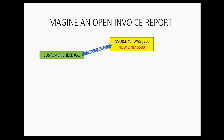It was check number 61 from a customer that provided the $200 applied to that invoice. If that was the only invoice that check was applied to, then it would make sense to enter the full invoice amount, enter the $200 check, and your open invoice report would look perfect with a balance of $500.